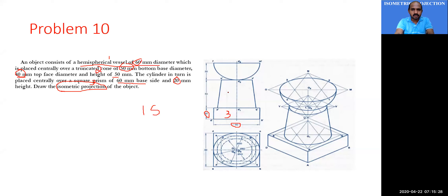The second solid above the square prism is a truncated cone with base diameter 50 mm at the bottom and top diameter 40 mm. The first solid at the top is a hemispherical vessel of diameter 60 mm, so its radius is 30 mm.